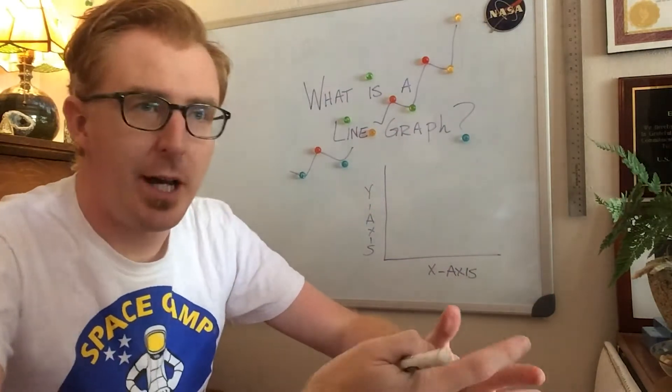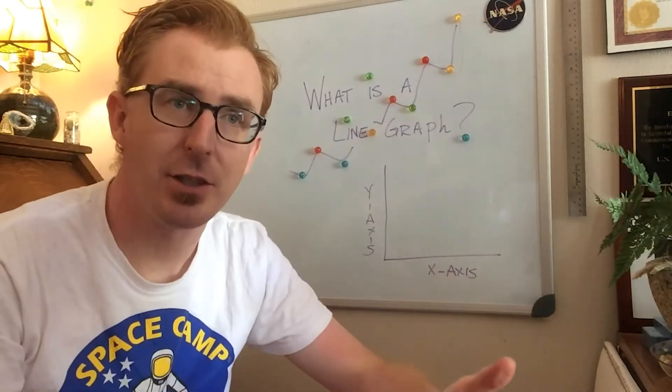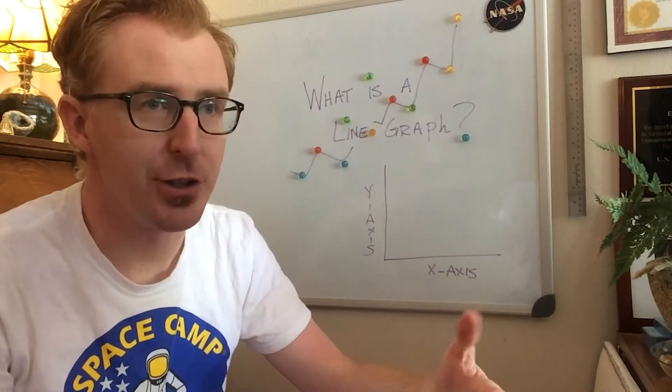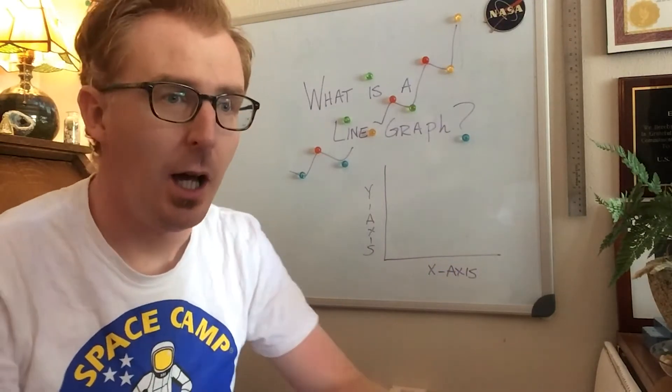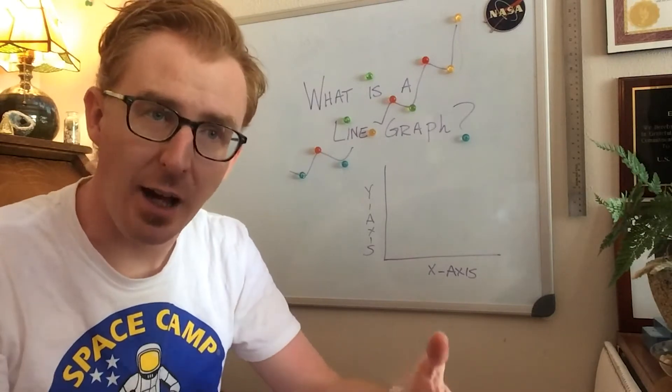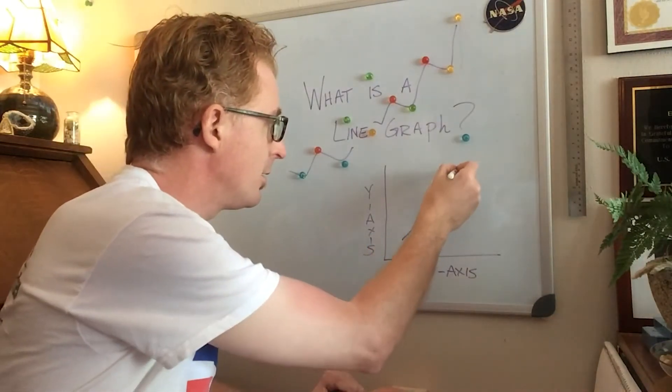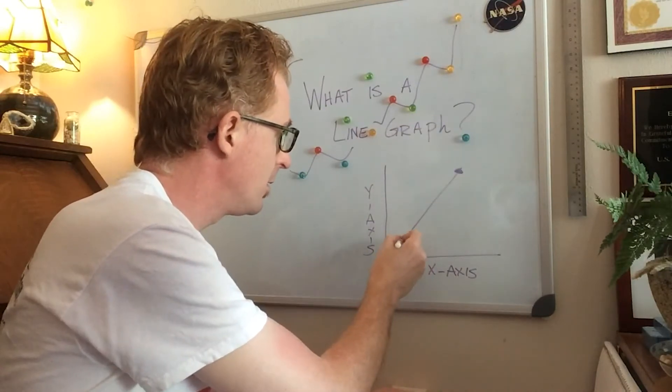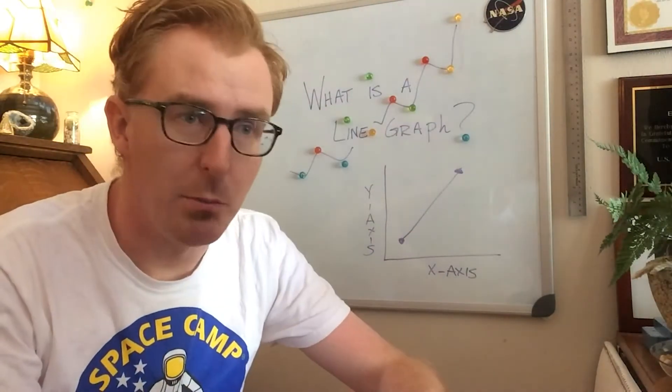A line graph is a graph with points connected by lines to show how data changes in value over time. And in mathematics, a line is the shortest distance between two points.